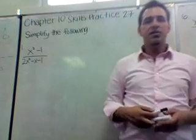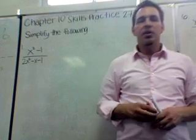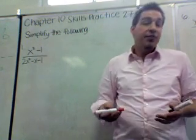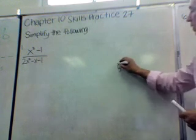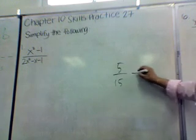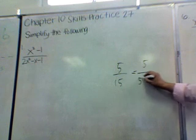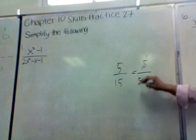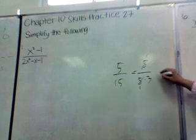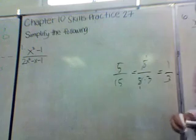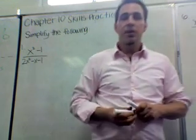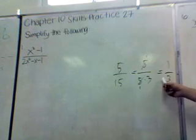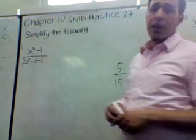In the first case, let's look at some simple fractions and go back to the basics. Take something like 5/15. It's really simple — 5/15 is the same thing as 5 over 5 times 3. When we see there's a 5 on top and bottom, we can divide by 5 on top and bottom and get 1 over 3. It's just simplifying fractions to get the lowest possible simplified form.